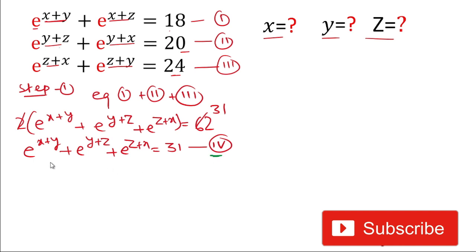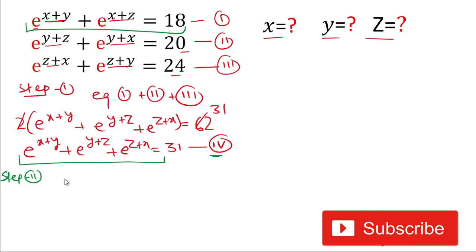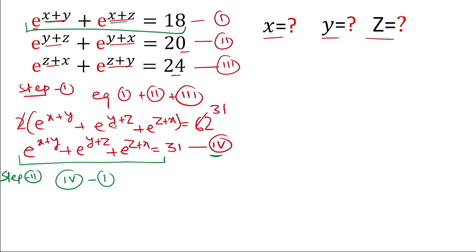Now, looking at equation 4, all three pair-sums are present. Step 2 is to subtract equation 1 from equation 4. When we subtract, e^(x+y) and e^(x+z) cancel, leaving only e^(y+z) = 31 − 18 = 13. So the value of e^(y+z) is 13.